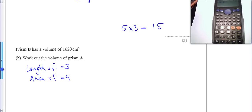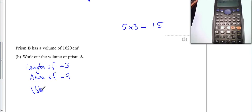So that tells us that the volume scale factor is going to be 27, 3 times 3 times 3, or 3 cubed.